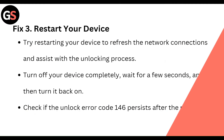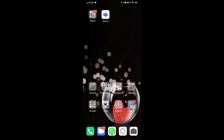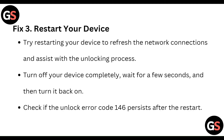Fix 3: Restart your device. Try restarting your device to refresh the network connection and assist with the unlocking process. Turn off your device completely, wait a few seconds, and then turn it back on. Check if the unlock error code 146 persists after the restart.